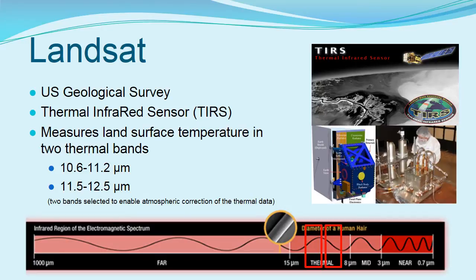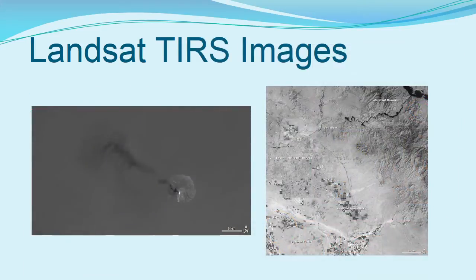Many airborne and satellite sensors operate in the longer thermal infrared wavelengths. These are used to identify and analyze phenomena such as ocean temperature, geologic features, and pollution studies. Landsat 8 carries a thermal infrared sensor that works in this region, and earlier versions of Landsat also had thermal sensors. The image on the left shows the intense heat of a volcano as well as its smoke plume. The image on the right shows the Phoenix, Arizona area, highlighting the darker tones of the relatively cool water and agriculture areas.